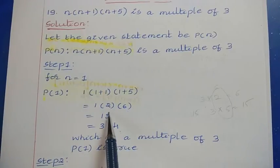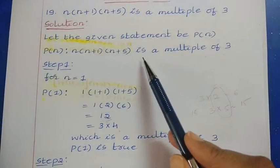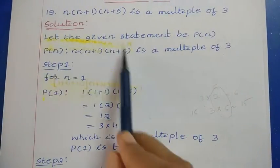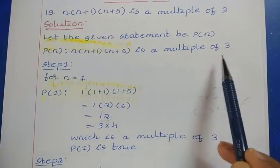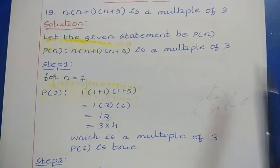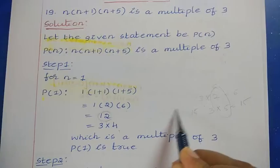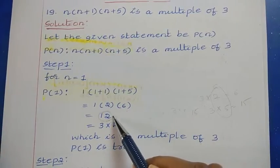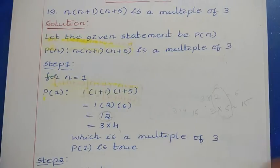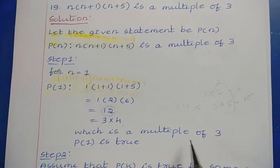We got the value 12. What we have to check is whether this final answer is a multiple of 3. We can write 12 as 3 × 4, which means 12 is a multiple of 3. So the statement is true for n=1, because we got an answer which is a multiple of 3.